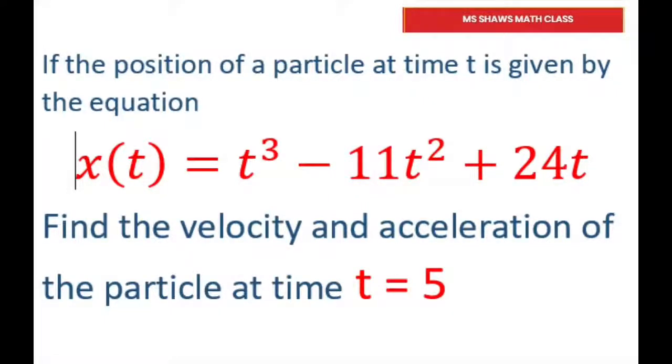Hi everyone. If the position of a particle at time t is given by this equation, this is called the position, and we need to find the velocity and acceleration of the particle at time t equals 5.